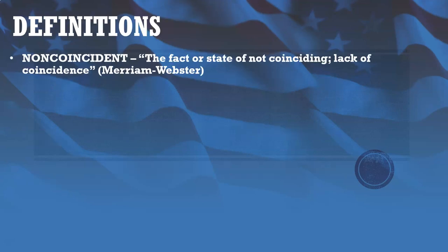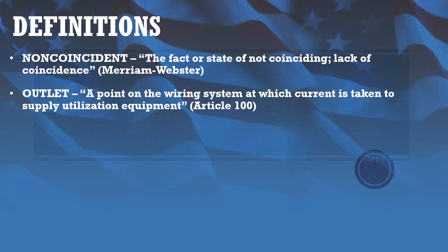Definitions: once again, we have non-coincident. This is going to be another one of our steps for the commercial calculation, same as it was for the dwelling calculation. And an outlet is a point on the wiring system at which current is taken to supply utilization equipment. It's important to note that sometimes the vernacular gets thrown around — we sometimes think of an outlet as a receptacle, when in reality it's any point on the electrical system where we're making a connection to bring power to something, such as a junction box where we might connect to a light fixture.